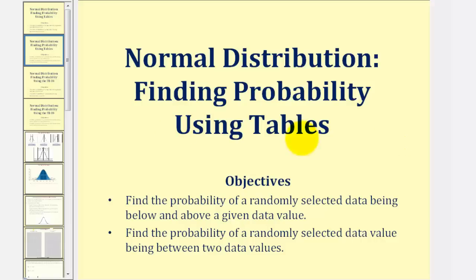Welcome to a lesson on how to use tables to find the probability of a randomly selected data value being below and above a given data value in a normal distribution, as well as how to find the probability of a randomly selected data value being between two data values.